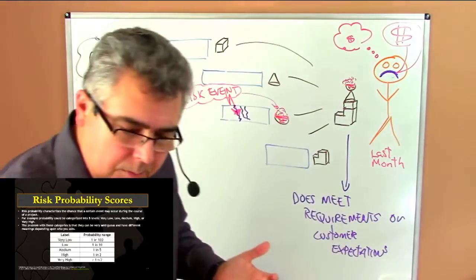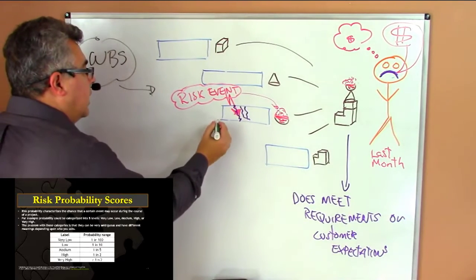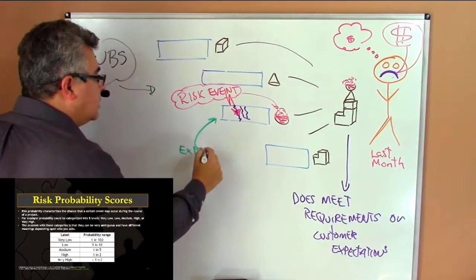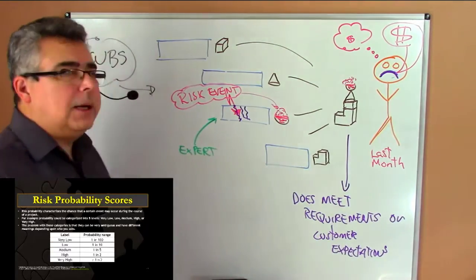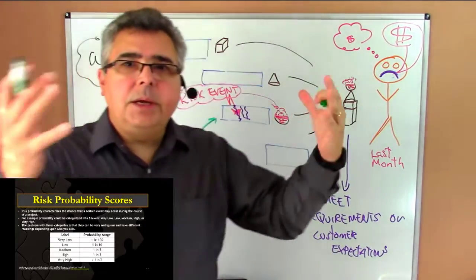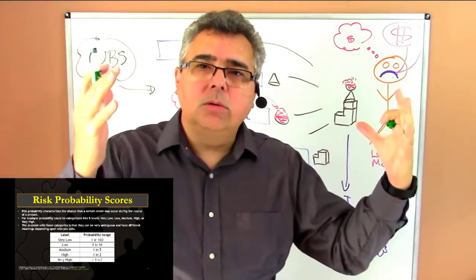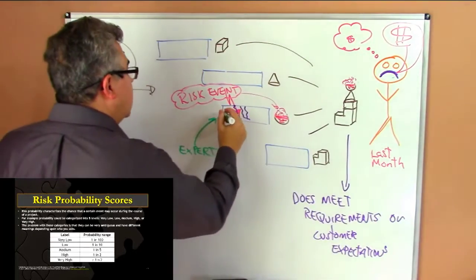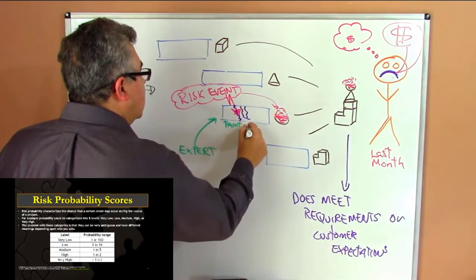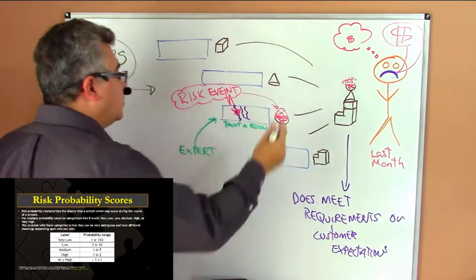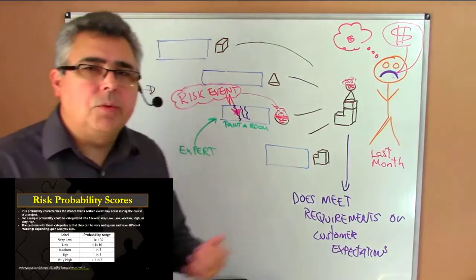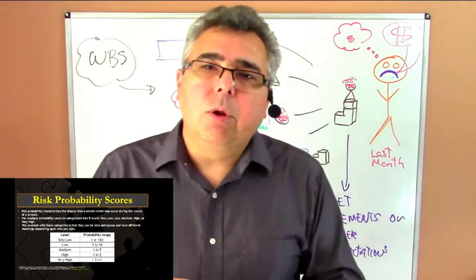So you can ask the expert on that task — someone that is an expert or has experience on the task. Let's say painting a classroom: we have four walls, and that is the task of painting a classroom. You go to the expert, probably a painter, and ask the painter what are the problems that you have faced in your life when you are painting a classroom.